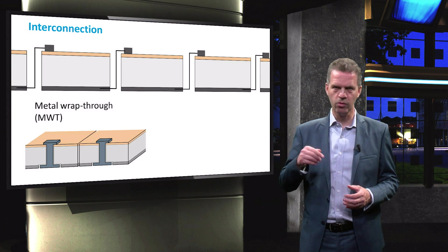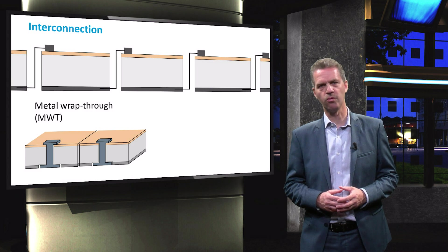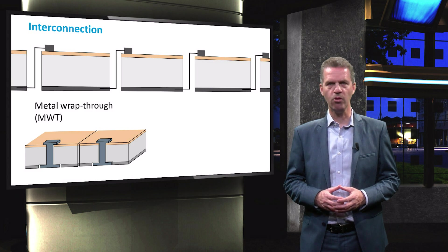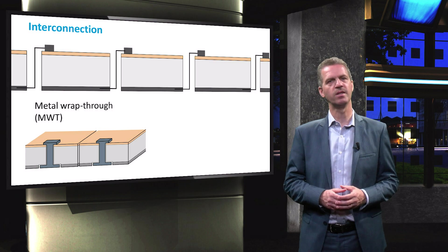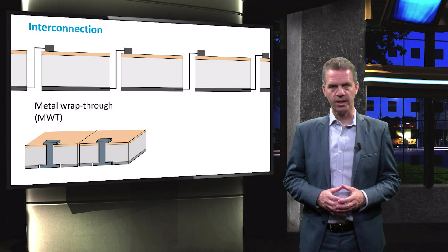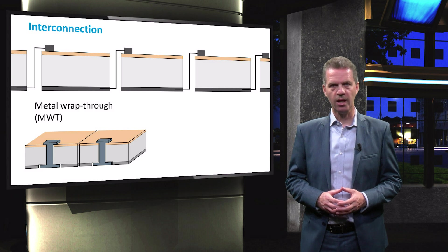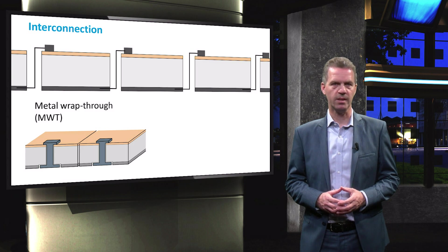Here, the front contacts are wrapped through the cell with a so-called via, such that both positive and negative terminals are located at the back side of the cell. The cells can now be placed much closer to each other since contact tabbing is omitted.